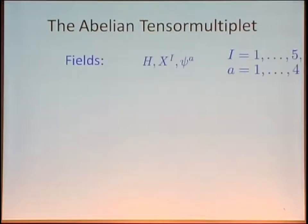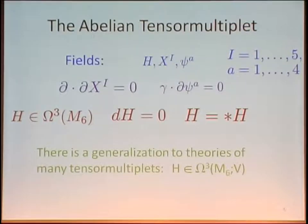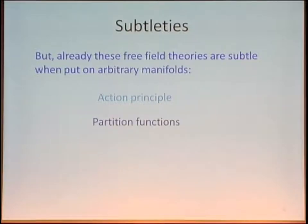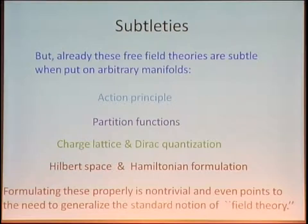There's a free-field multiplet consisting of five real scalar fields, four chiral fermions, and a three-form H, which is closed and crucially is self-dual. This theory can be generalized to a theory of many tensor multiplets where H is valued in a real vector space. Already these free theories are very subtle when put on arbitrary manifolds. If you try and talk about the action principle, the partition function, the charge lattice and direct quantization, the Hilbert space and Hamiltonian formulation — formulating all these things properly in arbitrary backgrounds is actually extremely subtle, and even forces us to generalize the standard notion of field theory.